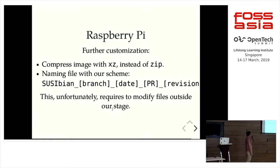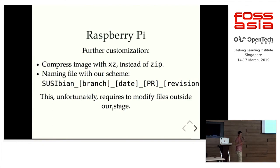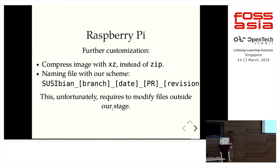We want to compress the image with XZ. The original build script uses zip, but we found that a zip file does not help you flash the image to the SD card faster, because with zip you have to unzip it to a file and then use that file to flash to the card. But with XZ, it helps you uncompress on the fly and write directly to the card — it saves more time. We also have a different naming scheme for our image files.